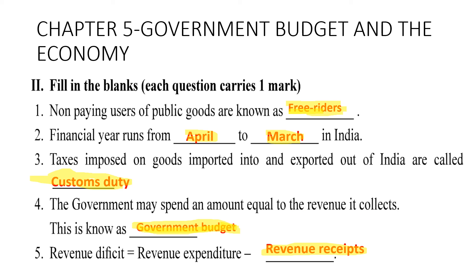Chapter five: government budget and the economy. First: non-paying users of public goods are known as free riders — they don't pay any money for public goods. Second: the financial year in India runs from April to March.